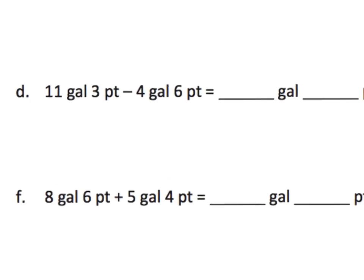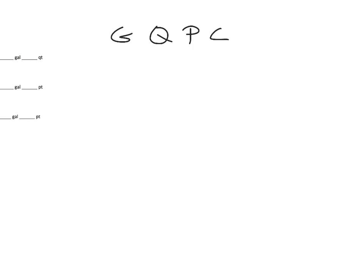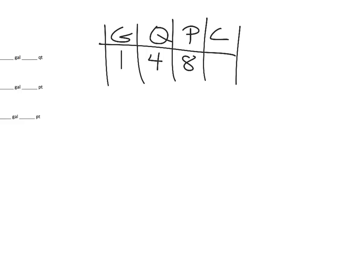Now for some subtraction with pints — I have to remember the conversion. I think about 'good queens prefer chocolate,' which reminds me: one gallon, four quarts, eight pints, and sixteen cups. So in one gallon you get eight pints.